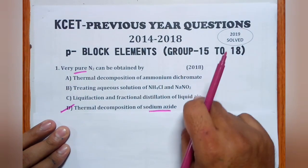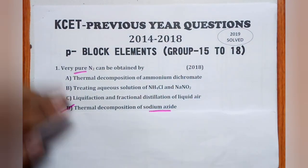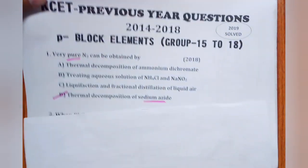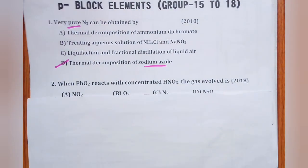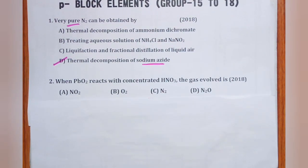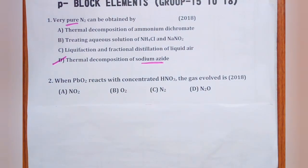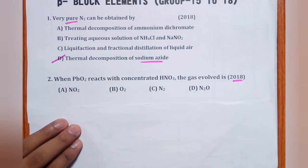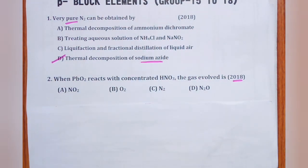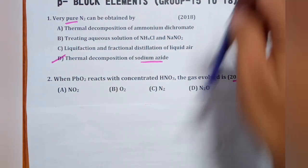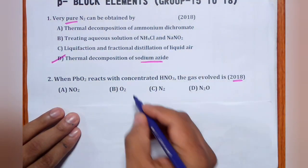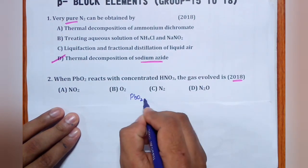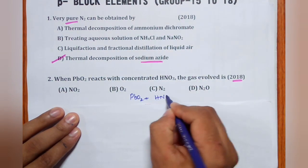Question 1 (2018): Very pure nitrogen is obtained by thermal decomposition of sodium azide or barium azide — this was asked in both CET and JEE exams. Question 2 (2018): When PbO2 reacts with concentrated HNO3, the gas evolved is oxygen gas — the answer is (b).